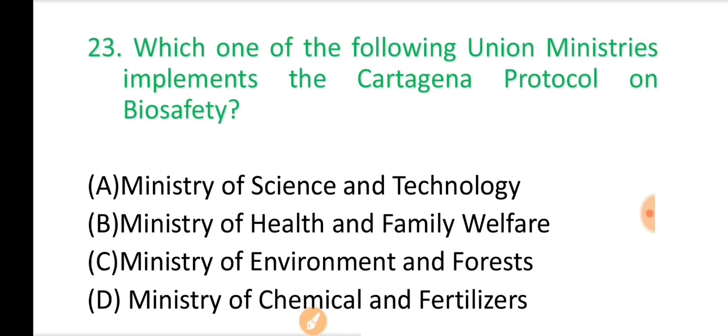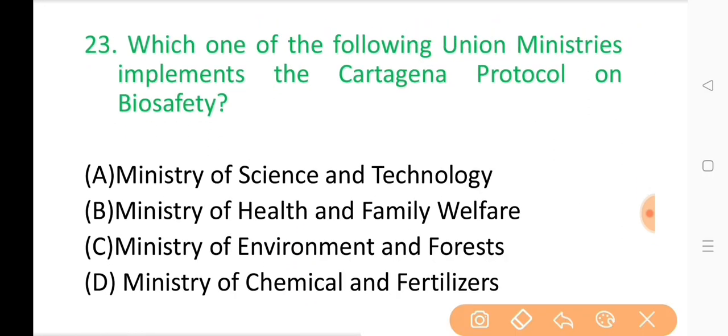Question No. 23: Which one of the following union ministries implements the Cartagena Protocol on Biosafety? The correct answer is Option C: Ministry of Environment and Forest.